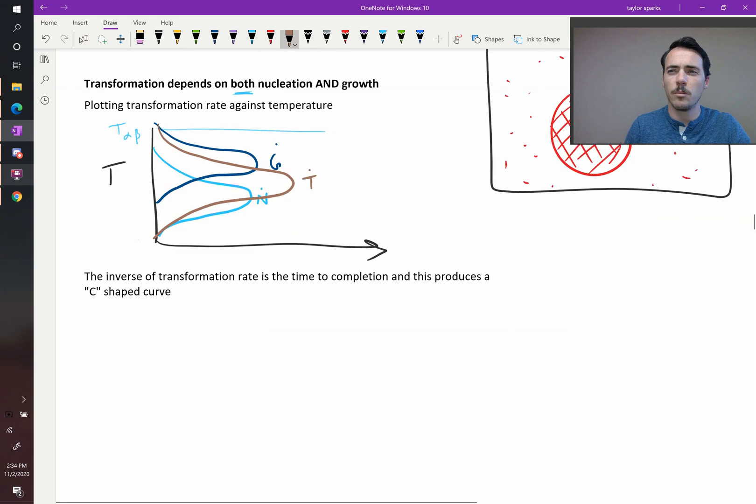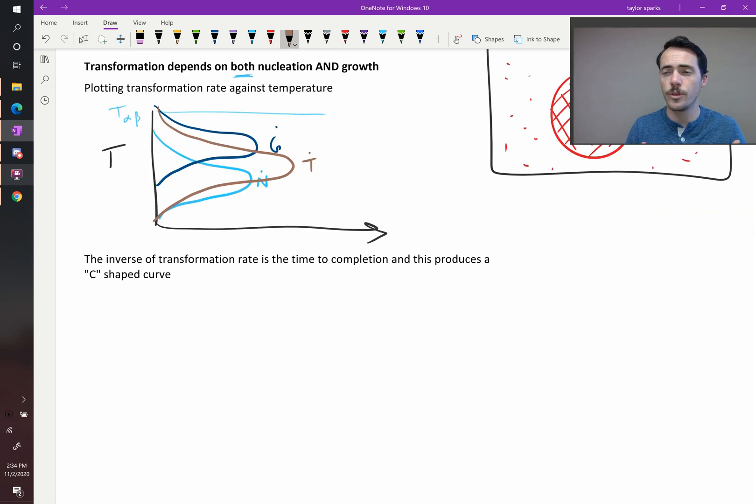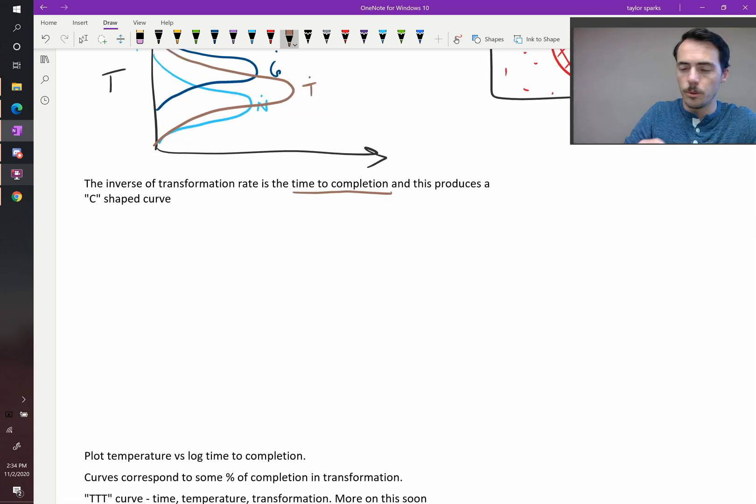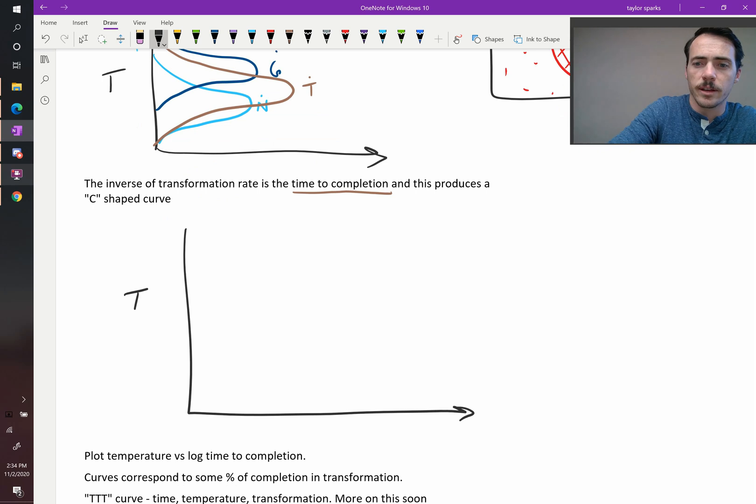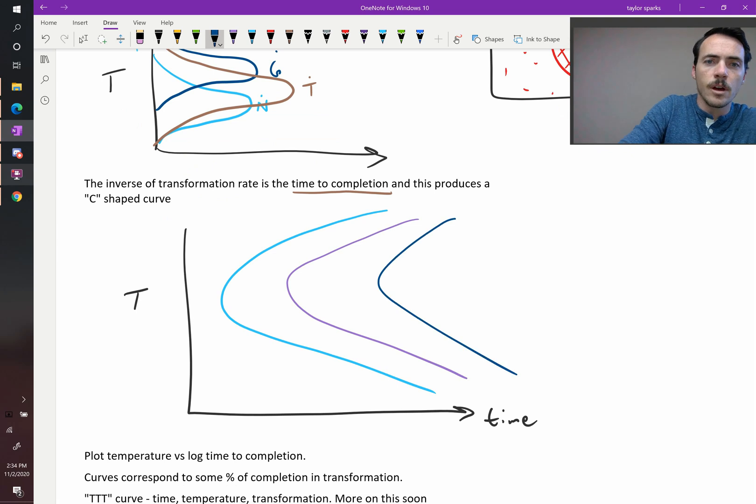Now it's more common to think of these in terms of time necessary for the transformation to occur, and the inverse of that will be the time to completion. So if we re-plot these, then we get the following. This will be temperature on this axis, but now it's going to be time on this axis. And we get curves that look like this. Where maybe the light blue line represents 1% transformed, the purple might represent 50% transformed, and the dark blue might represent 99% transformed, for example.